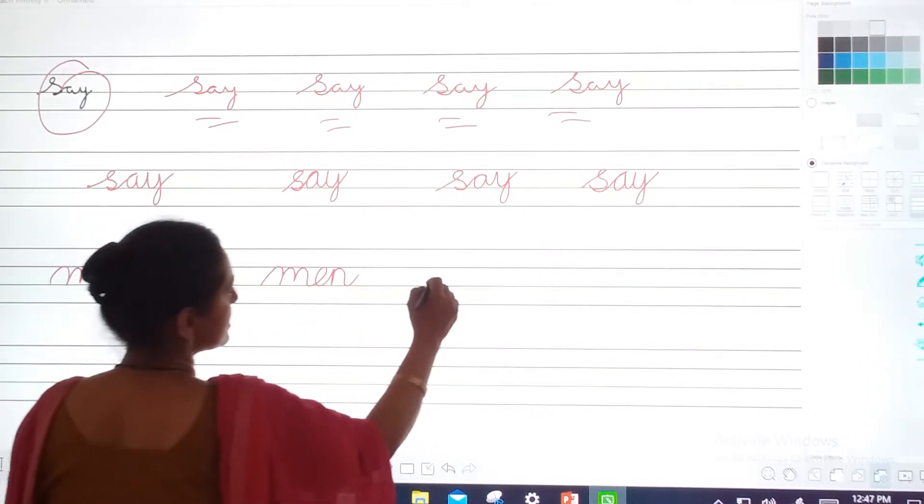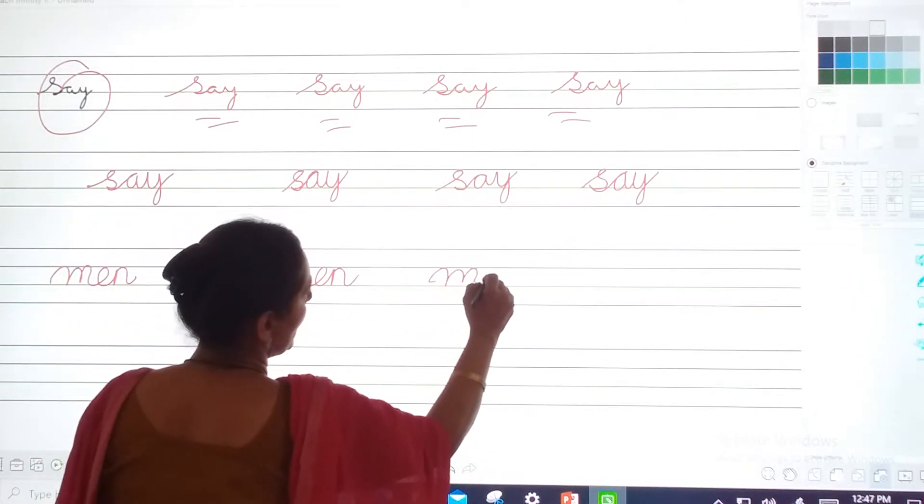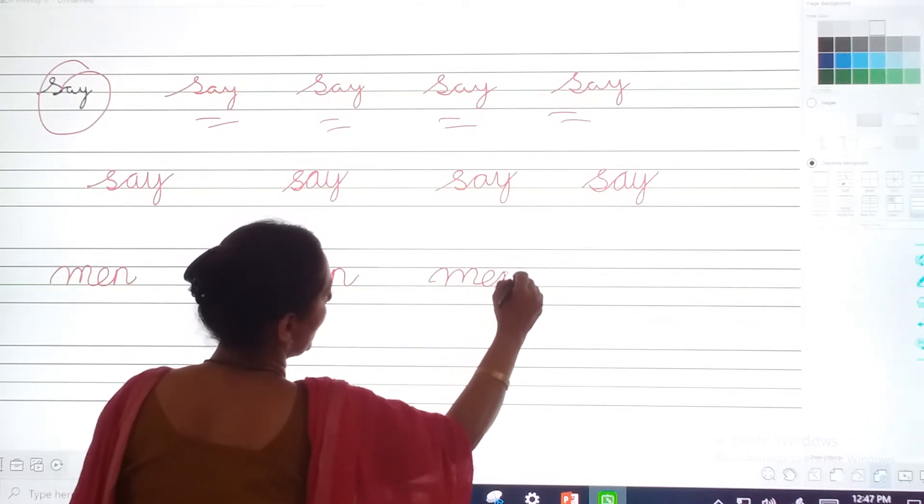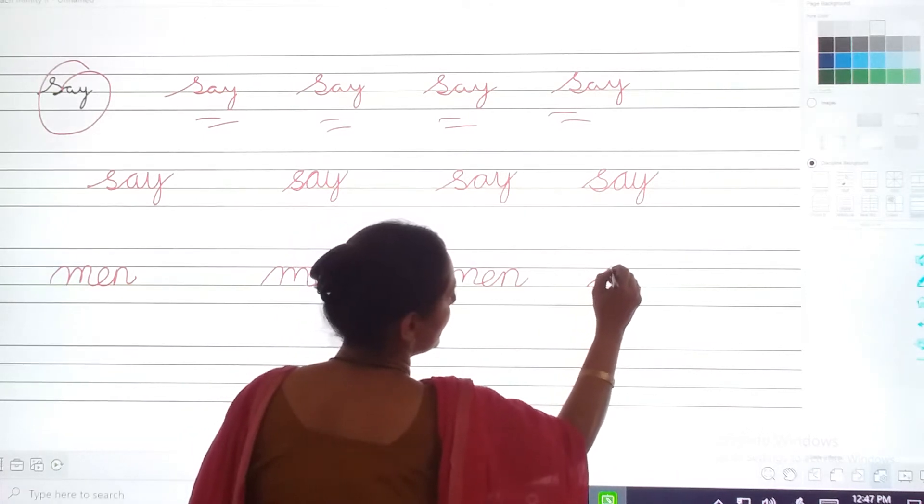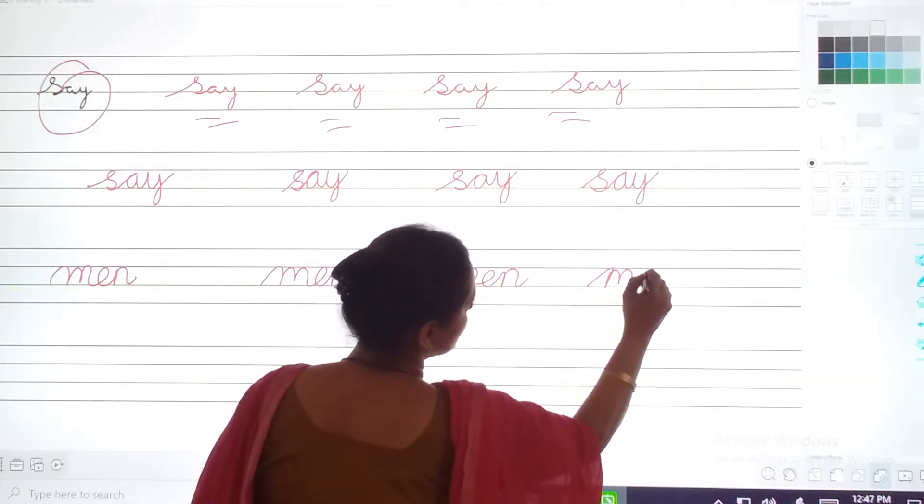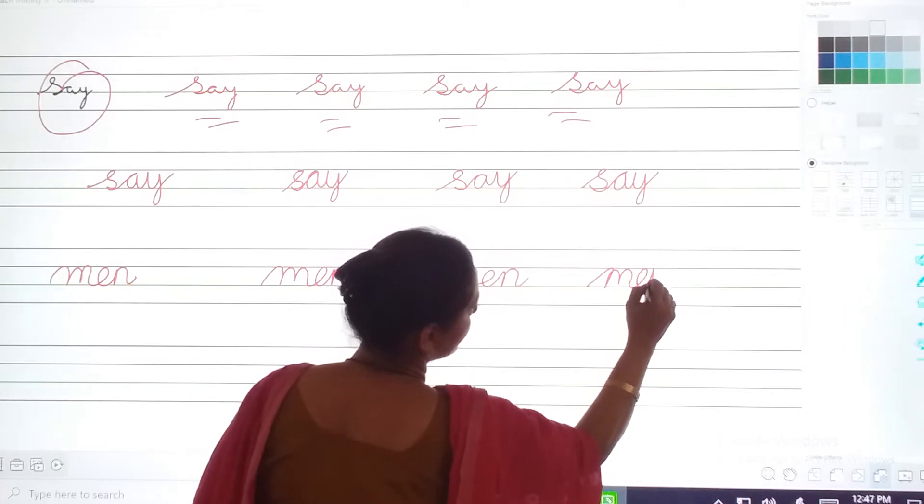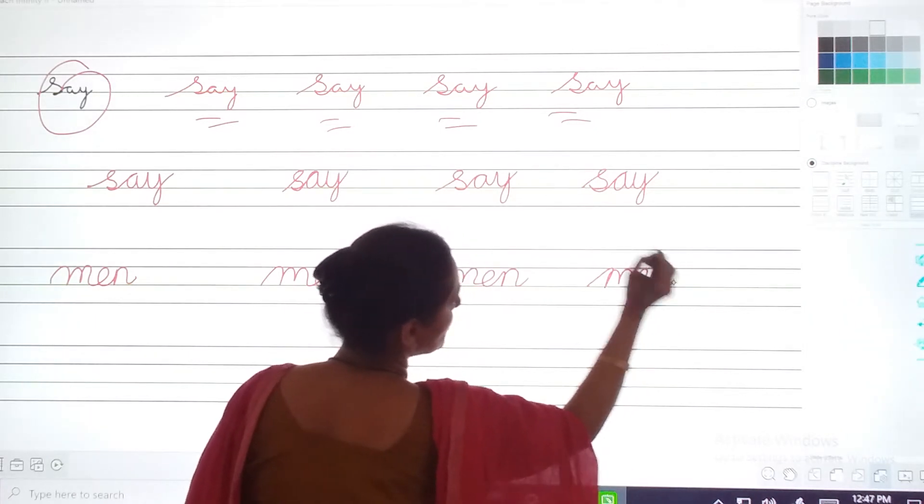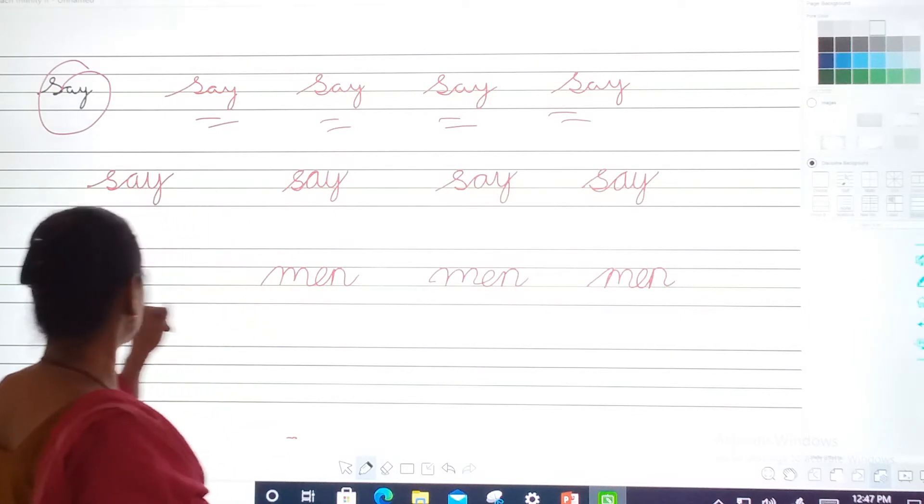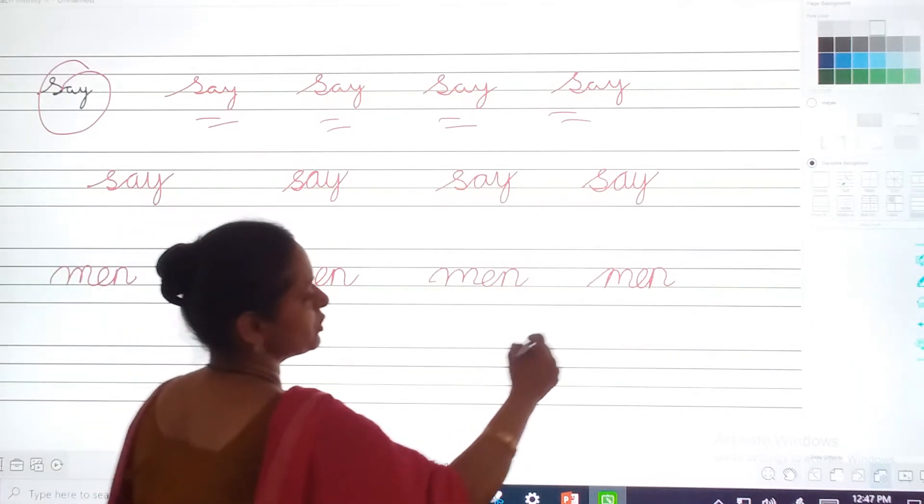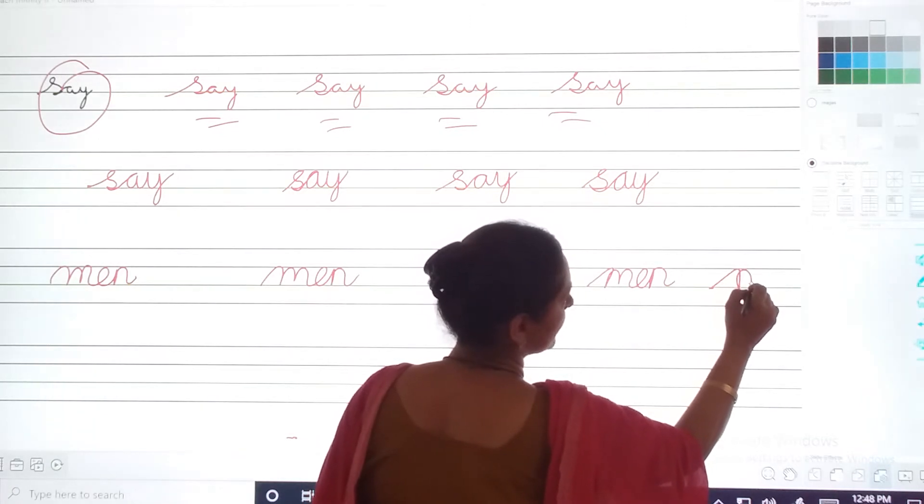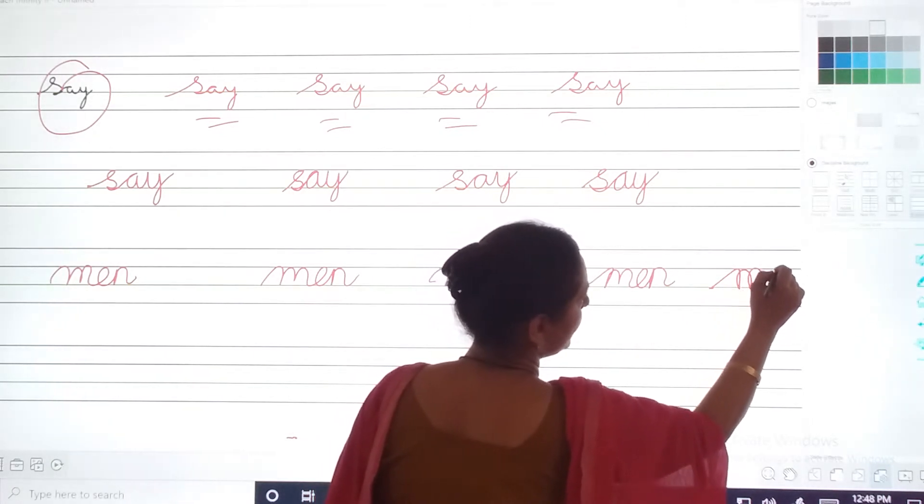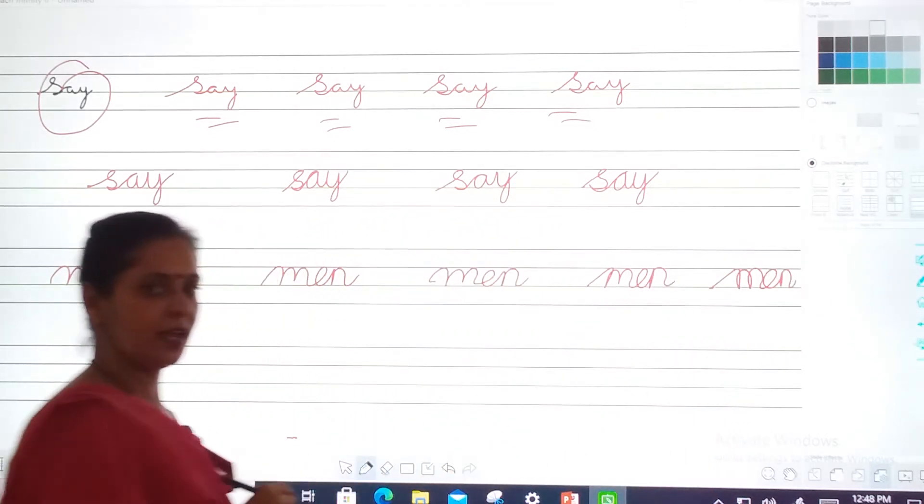And now let's see how we should write men. M, E, N. It's men. You will write in this way. M, little bit slanting and cover only the two middle lines. M. This tarah bhi nahi. This tarah bhi nahi. You have to take first the slanting line. Straight one and another M. And in this way you have to write spelling of men. Okay?